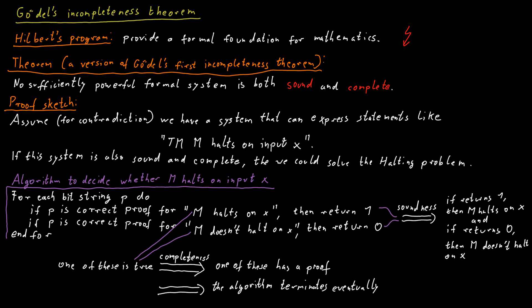So this program solves the halting problem, but we know that the halting problem cannot be solved. And therefore, some of our assumptions must be wrong. And the assumption that we made was that we have a sufficiently powerful formal system that is sound and complete. So this cannot exist.